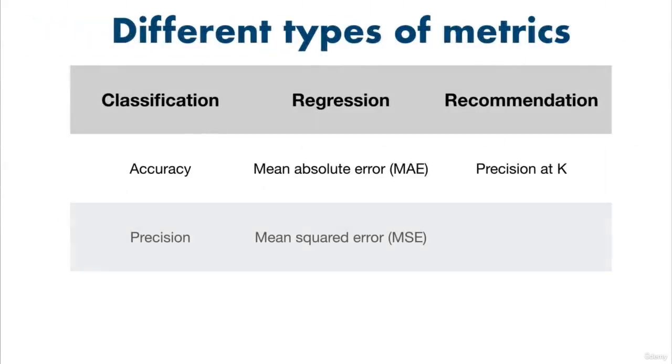And as you could imagine, there are different evaluation metrics for different problems. For classification or predicting whether something is one thing or another, accuracy, precision, and recall are common.